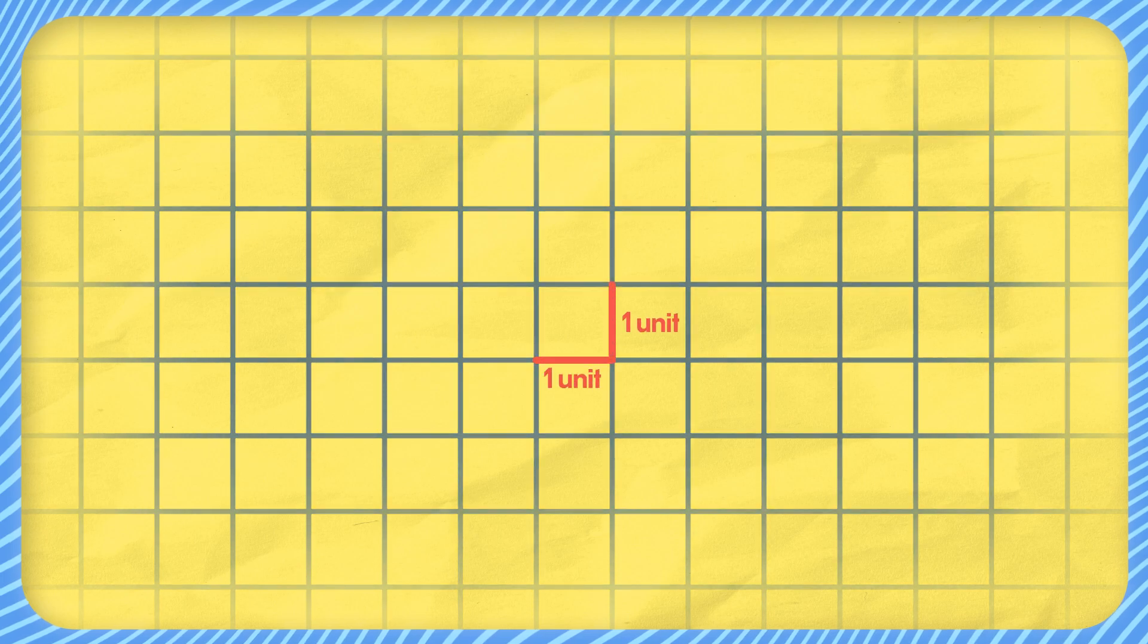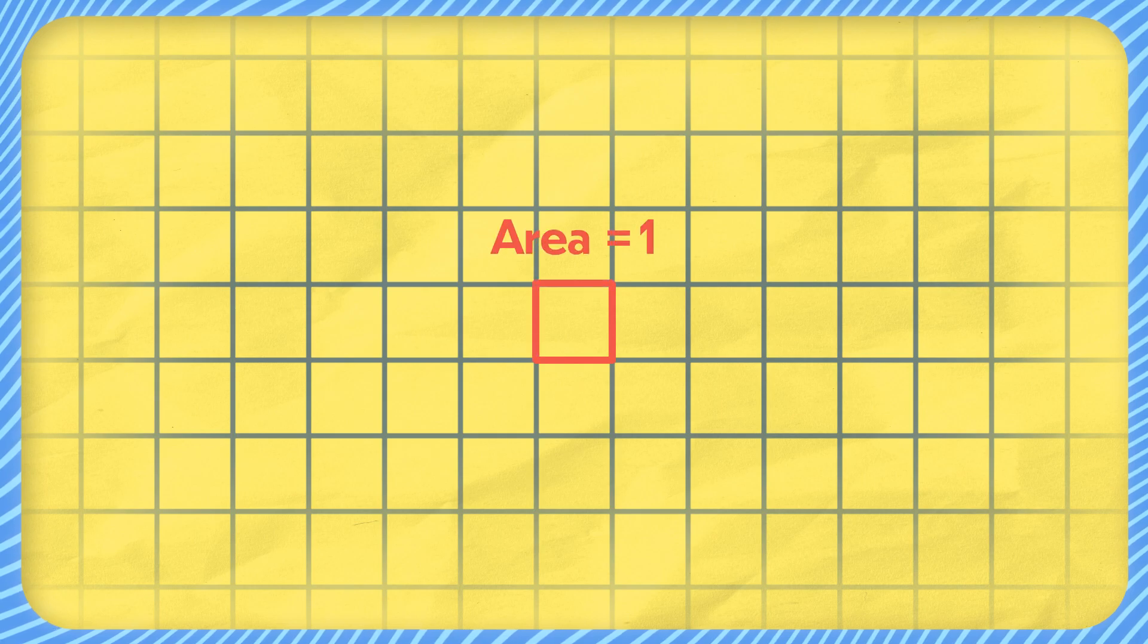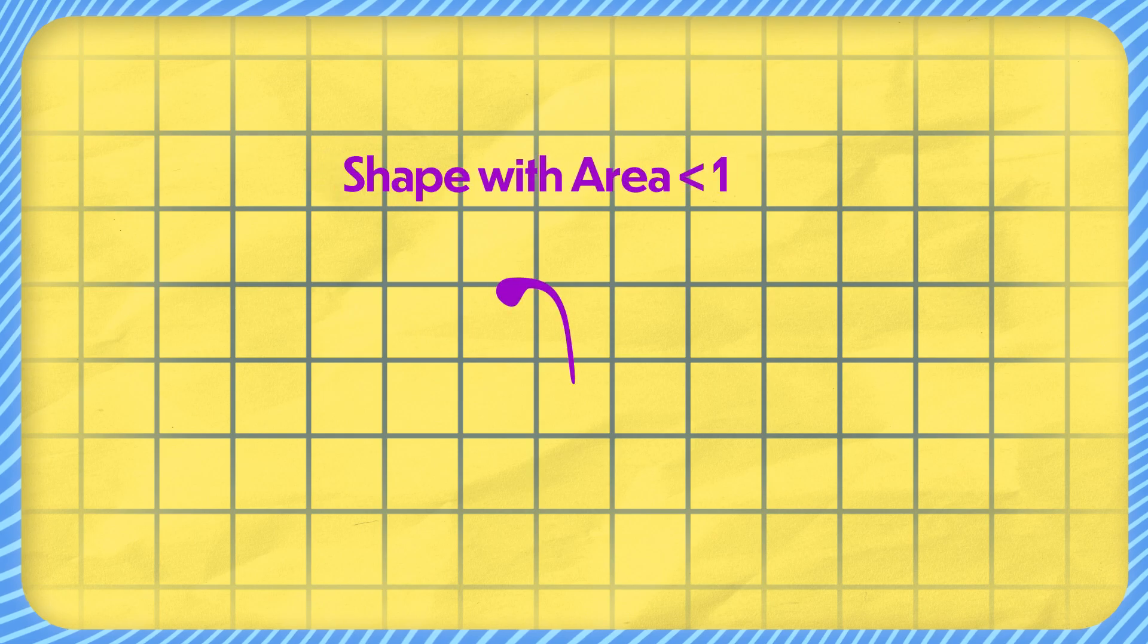Imagine for a second an infinite grid, where all the horizontal and vertical lines are spaced one unit apart from each other. This is nice for a few reasons, one of which being that each box on the grid has an area of one. Now on this grid, imagine there's a shape with area less than one, say this guy right here.